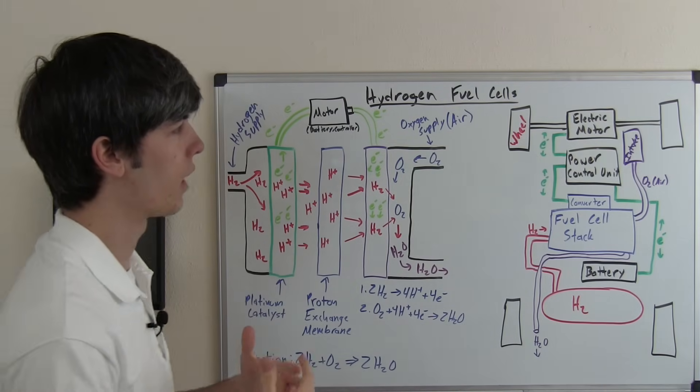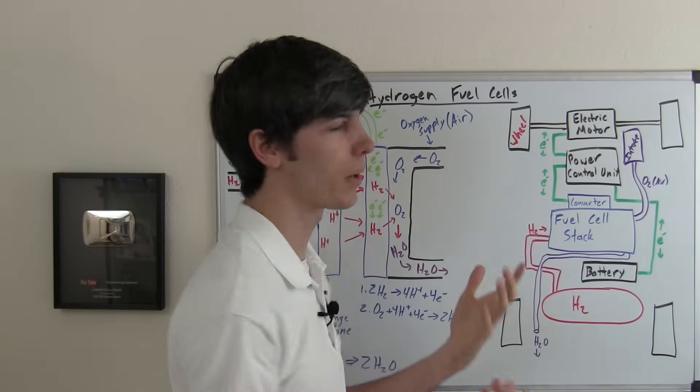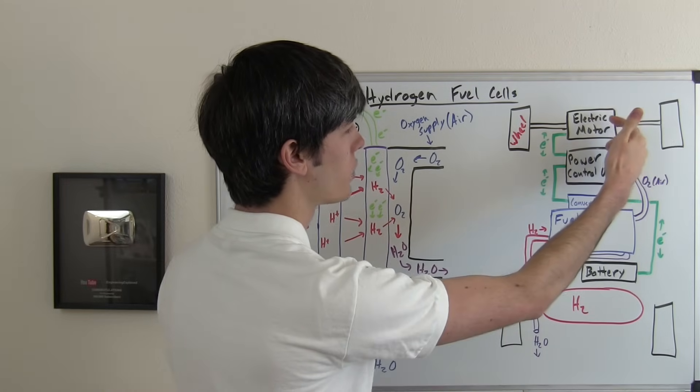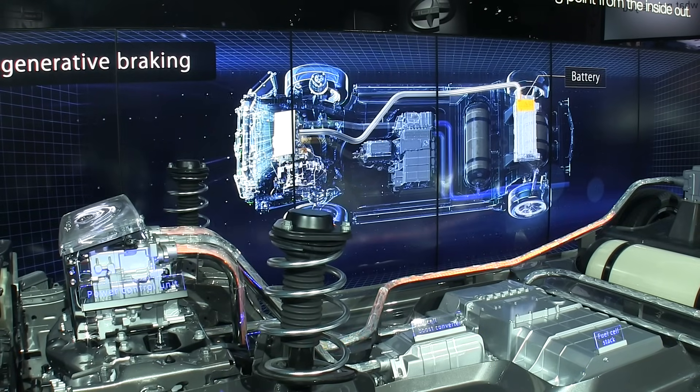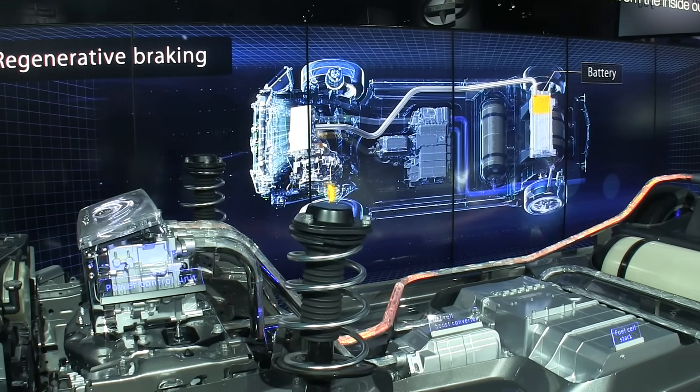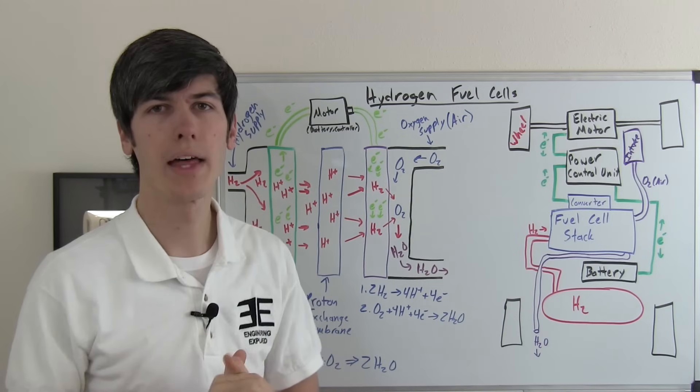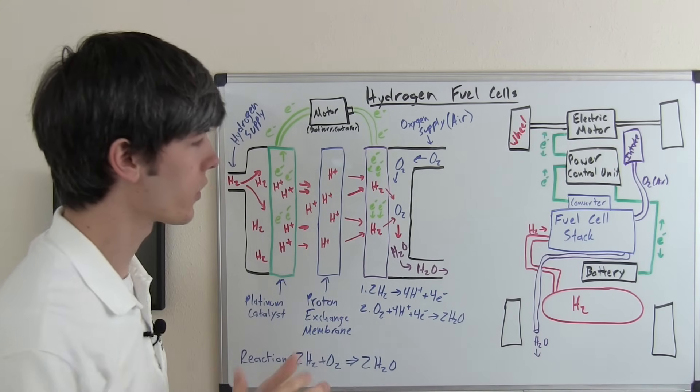Now the other thing that you can do with this is regenerative braking. So as you're slowing down, you can take the energy generated by the electric motor, send it back to the power control unit, and then send that to the battery. So that energy can then be used at a later time.